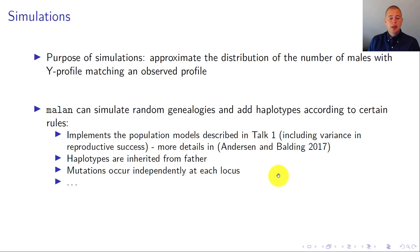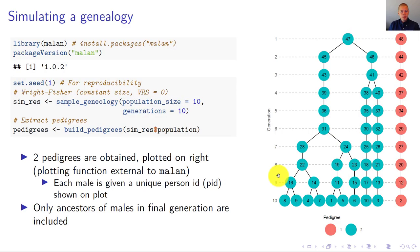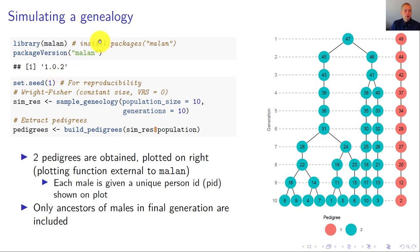To use the software, first type library(malan) to tell R we want to use the functions in this package — you need to install the package first. In this talk I use version 1.0.2 of Malan, available on CRAN. I also use set.seed() with a seed value of one for reproducibility, so that running these random simulations again with the same seed produces the same results.